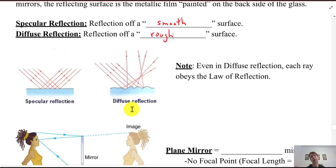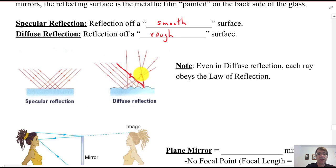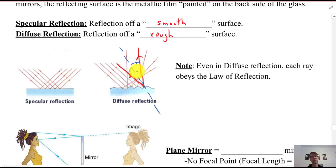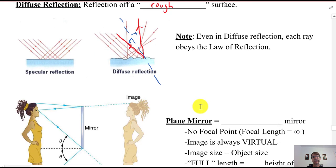With diffuse reflection, this would be reflection more like off a wall. Even though each individual ray still follows the law of reflection, the surface is not smooth, so it's kind of hitting the side of a hill. That reflective ray still obeys the law of reflection. We're not going to be dealing with diffuse reflection here — most things in life are diffuse reflectors, and they reflect the color of light that they appear.